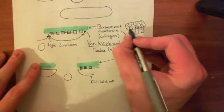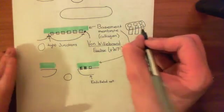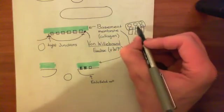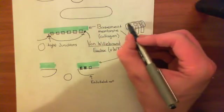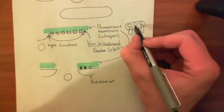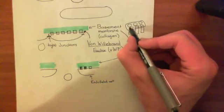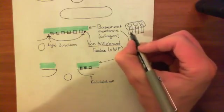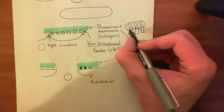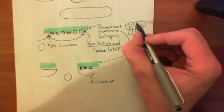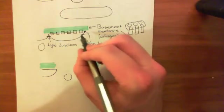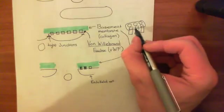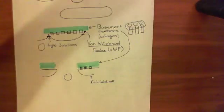Tight junctions are often compared to the plastic packaging of a six-pack of beer. The cans of beer are like the endothelial cells, and the plastic wrapper is the tight junction — it goes around every aspect of the cell. You just cannot get to the basolateral side of the cell, analogous to the bottom sides of the beer cans, because the tight junction is just everywhere. So the platelet cannot gain access to these basolateral portions of the cell, and cannot gain access to the Von Willebrand Factor because of the tight junctions blocking them. We'll continue this discussion in the next video.